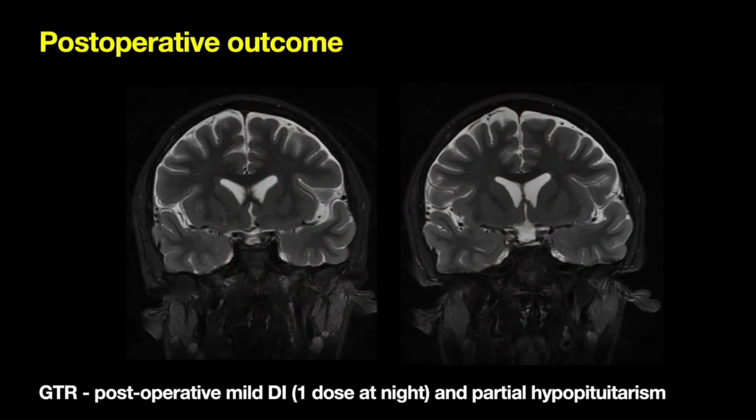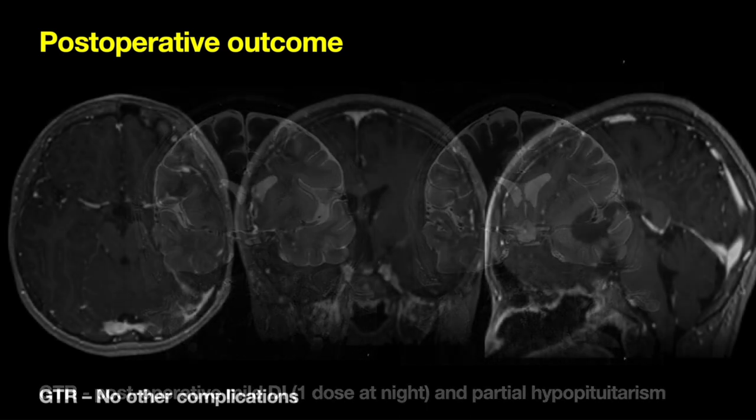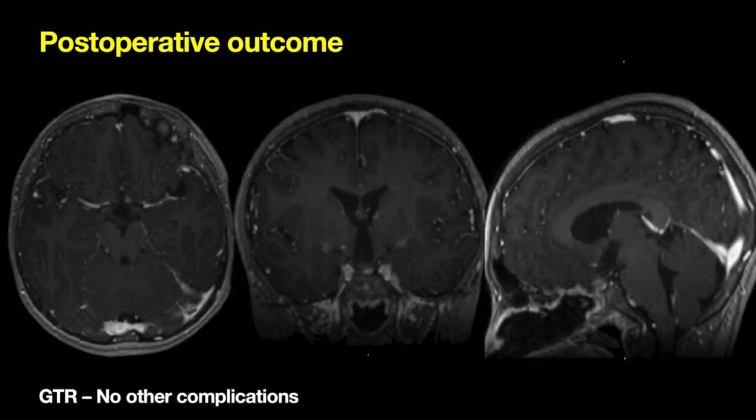The patient had an excellent outcome with gross total resection and preservation of the stalk, although with mild postoperative diabetes insipidus requiring just one dose at nighttime and no other complications — particularly the hypothalamic region was completely intact and nicely preserved. Thank you.